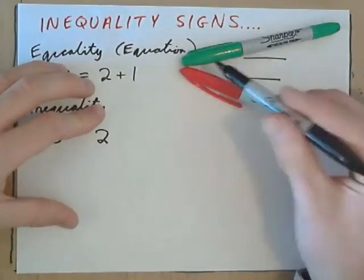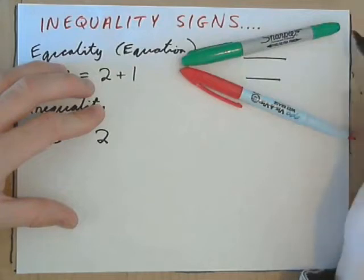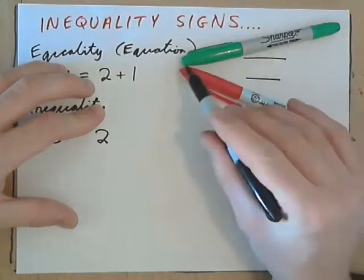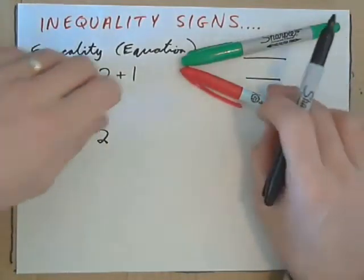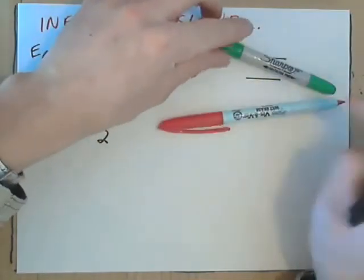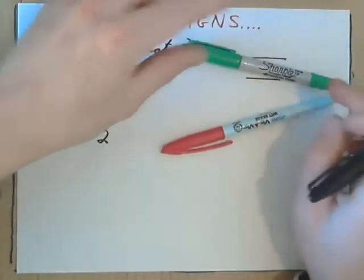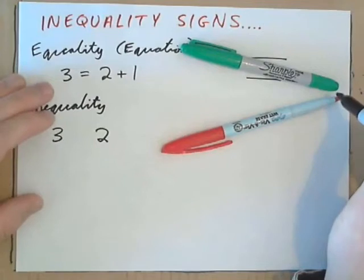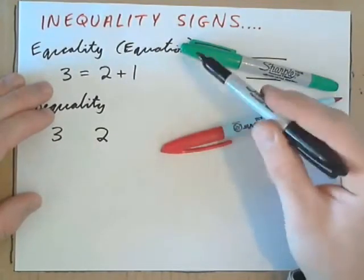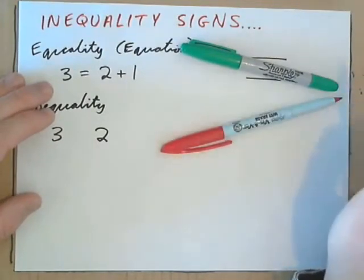Which is bigger, a gap or a point? Well, a gap is bigger, isn't it? And the point is smaller. So, we could have it like this, or we could have it like this. And the point always goes beside the small number. The gap goes beside the larger number, because the gap is larger than a point, right?